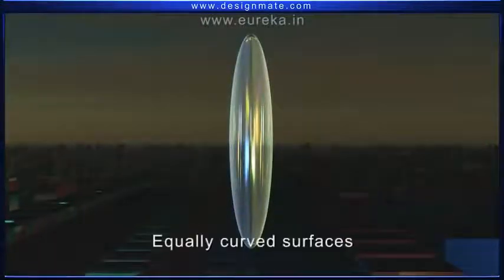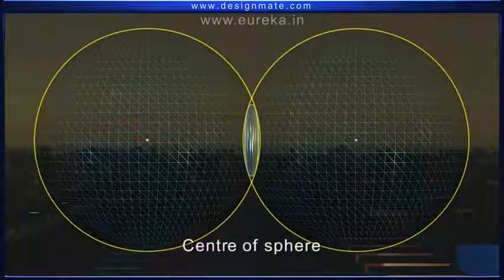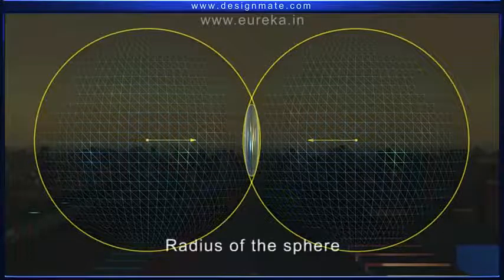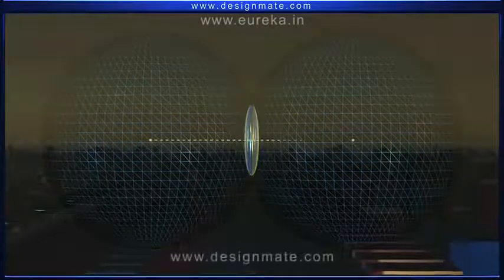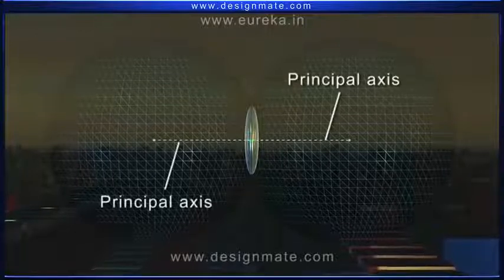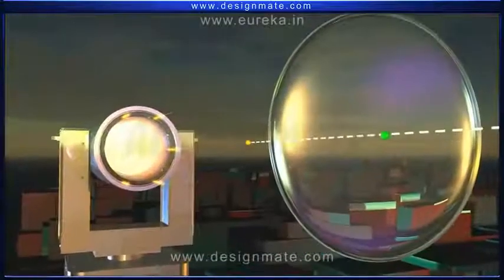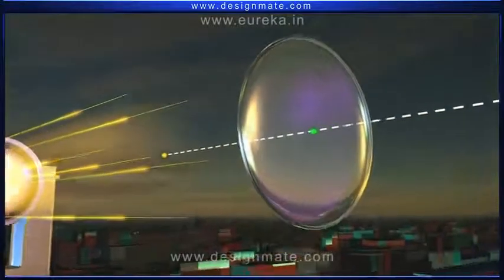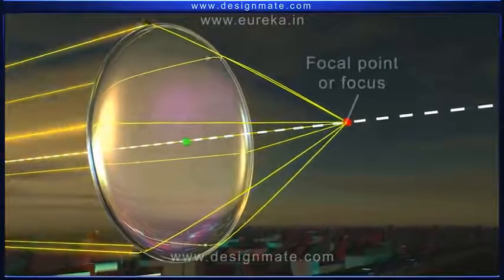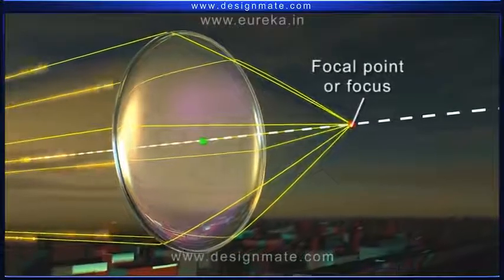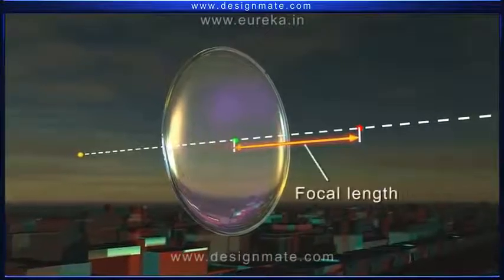We can consider these equally curved surfaces of the lens to be small parts of spheres. The center of these spheres is called the center of curvature of the lens. The radius of the spheres is known as the radius of curvature of the lens. The line joining the centers of curvature on both sides of the lens is known as the principal axis, which passes through the optical center of the lens. The light rays parallel to the principal axis and incident on one side of the lens undergo refraction and converge at a point on the principal axis on the other side. This point is called the focal point, or focus, of the lens.